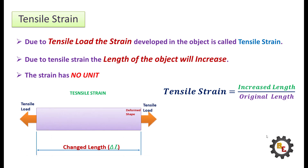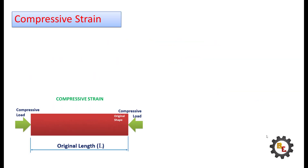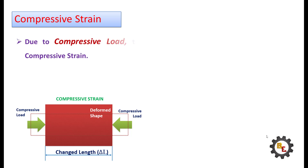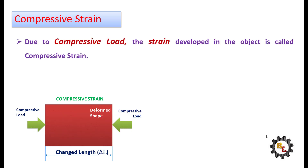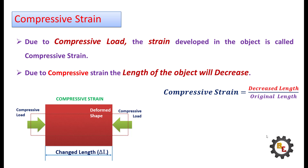Next, compressive strain. Due to compressive load, the strain developed in the object is called compressive strain. Due to compressive load, the length of the object will decrease. Mathematically, compressive strain is the ratio between decreased length to original length.